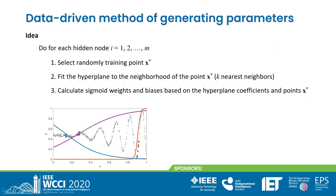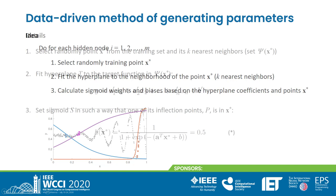And now the proposed method. The idea is as follows: for each hidden node, select randomly a training point x*. Fit a hyperplane to the neighborhood of this point. Then calculate sigmoid weights and biases based on the hyperplane coefficients and point x*. This is visualized in the figure. We select a training point and its neighborhood, then fit a straight line to these points and construct a sigmoid which has the same slope at its inflection point as the line. We repeat this for other points. As a result, we obtain a set of sigmoids which represent the local features of the target function.